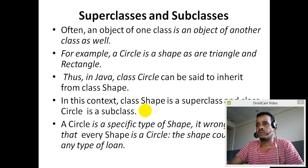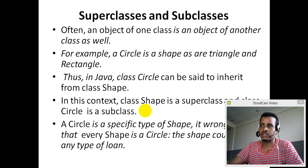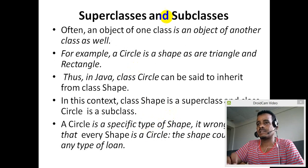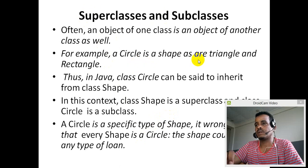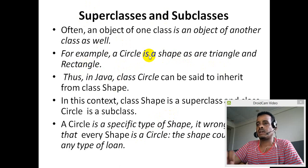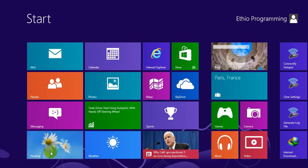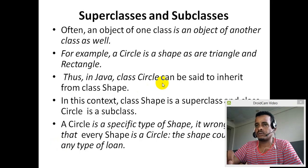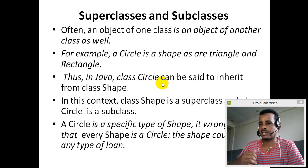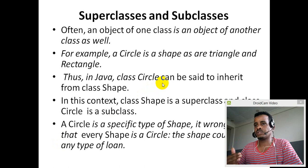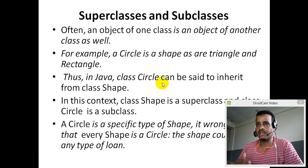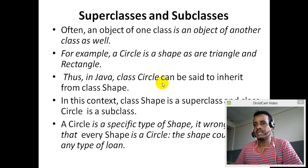A subclass object is also a superclass object. For example, a circle and a shape — a triangle and rectangle are all shapes. Circle, triangle, and rectangle are subclasses of shape. Circle is a subclass of shape. Triangle is a subclass of shape. Rectangle is a subclass of shape.